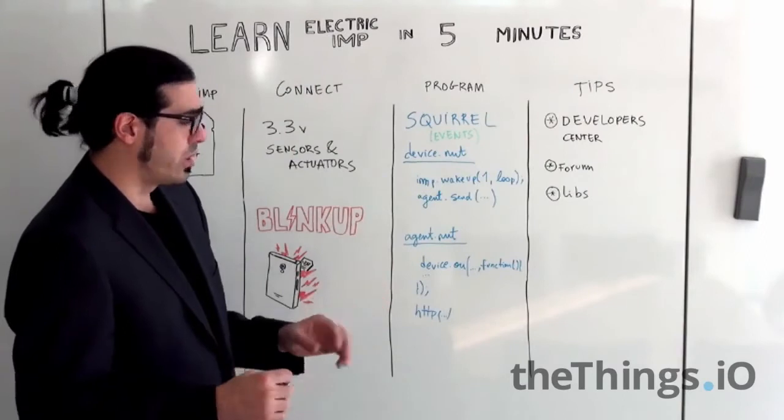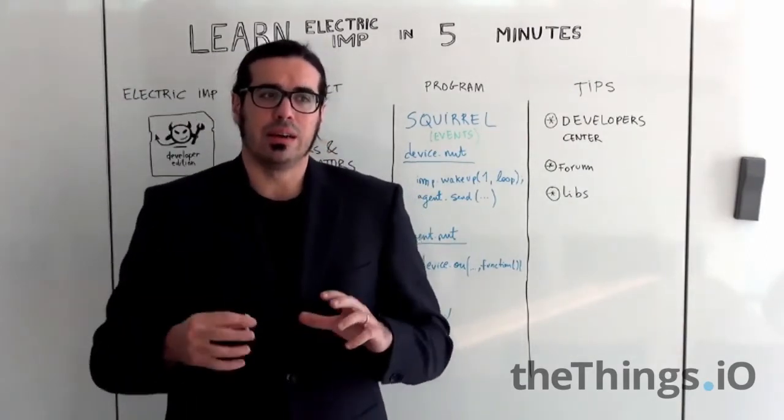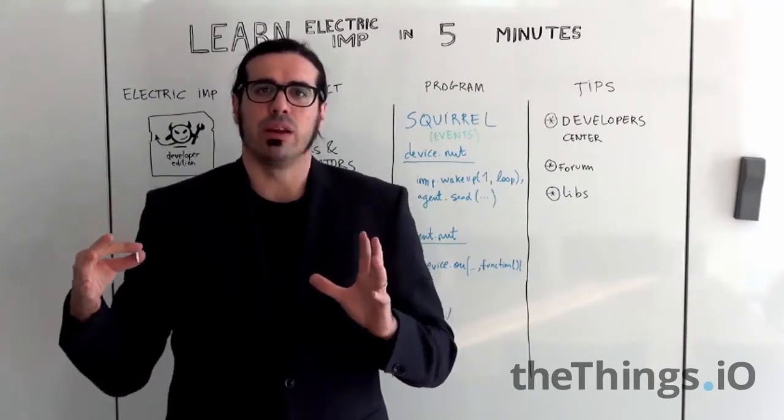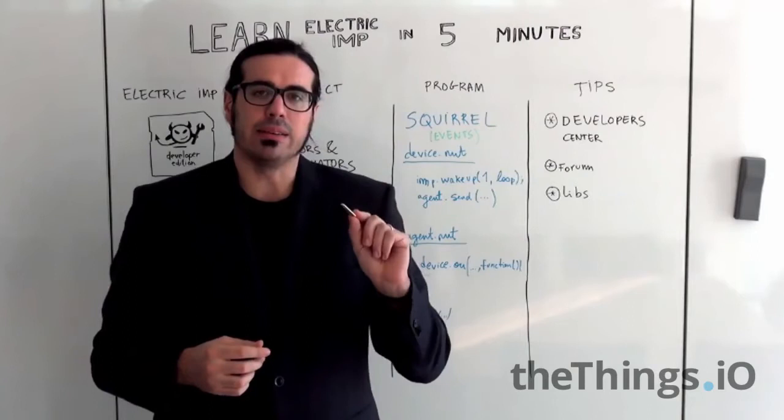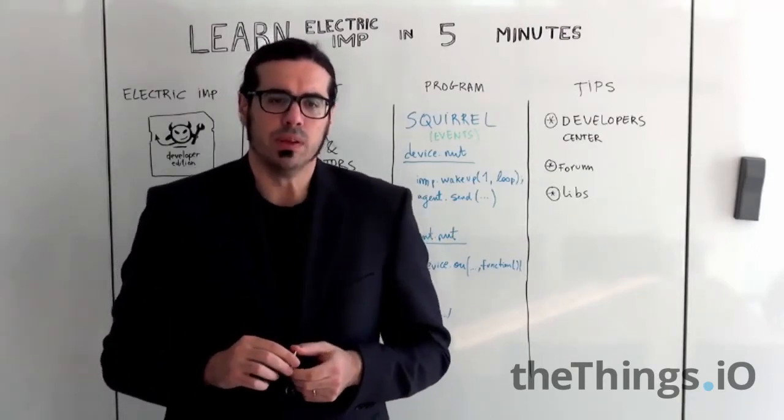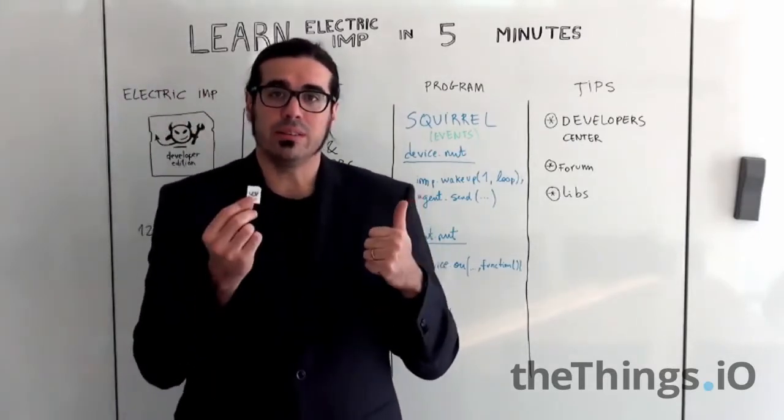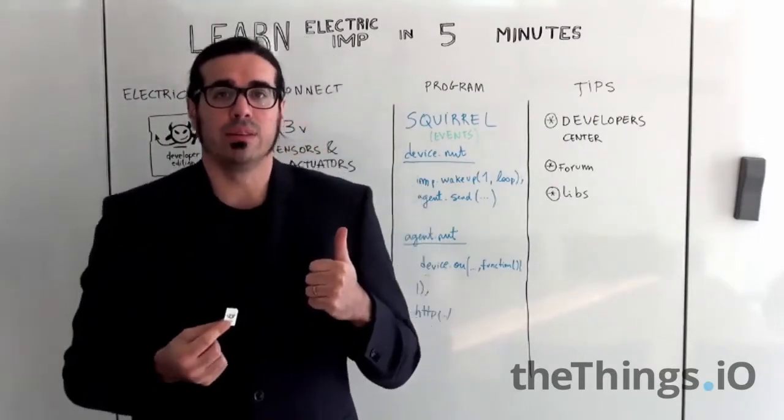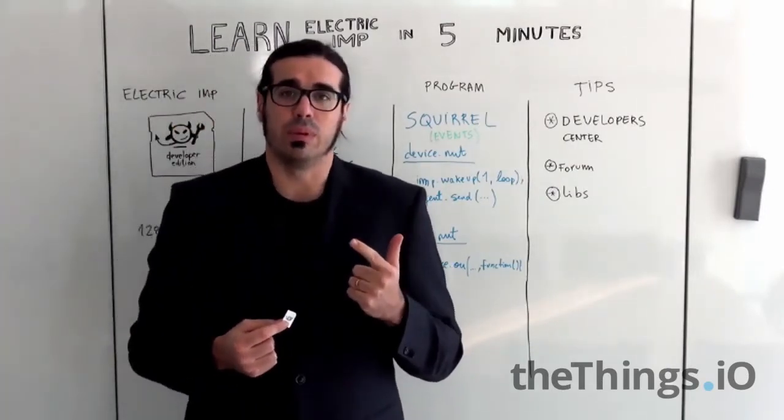Okay so how does it work? So ElectricIMP actually is a cloud agent running on their cloud infrastructure and actually each device is speaking with one agent running on their cloud solution. That means that you need to program two things. The first one is the device, the physical one that you have, and the second is the agent that's running on the ElectricIMP cloud platform.